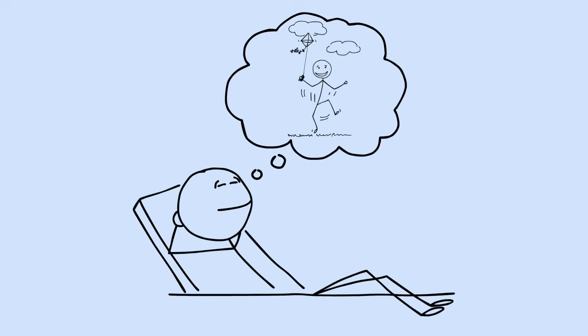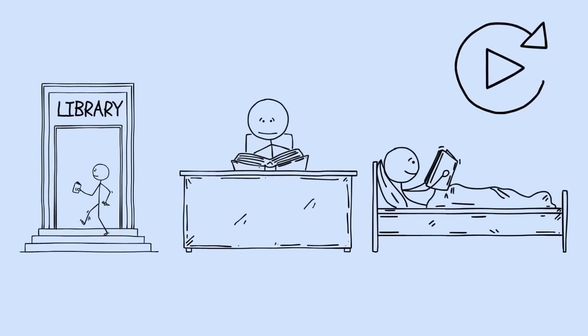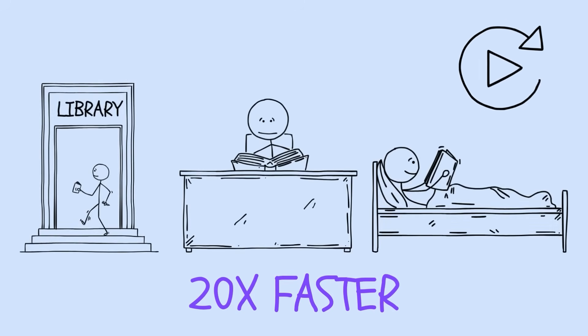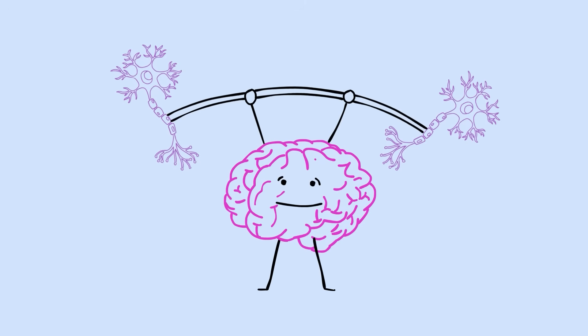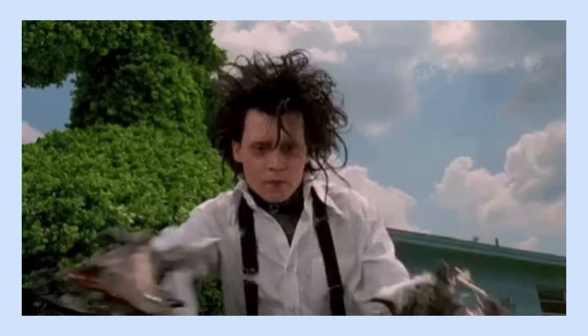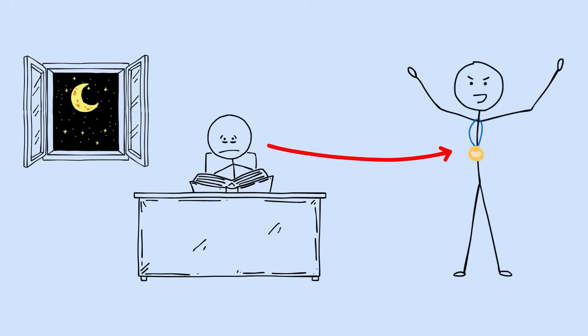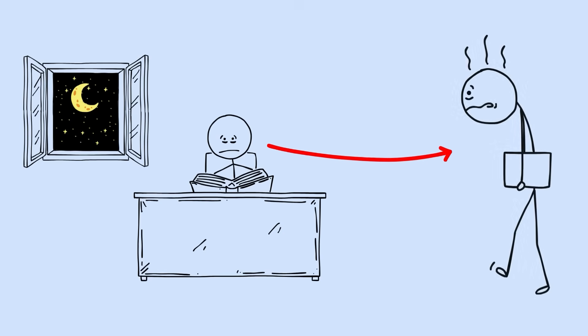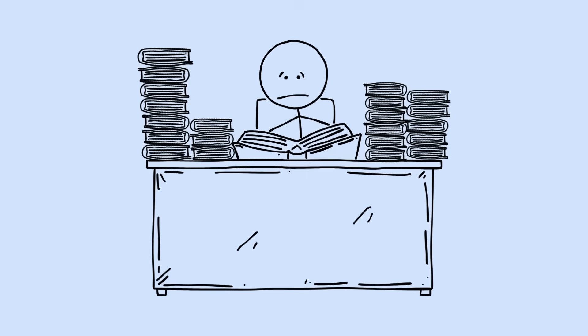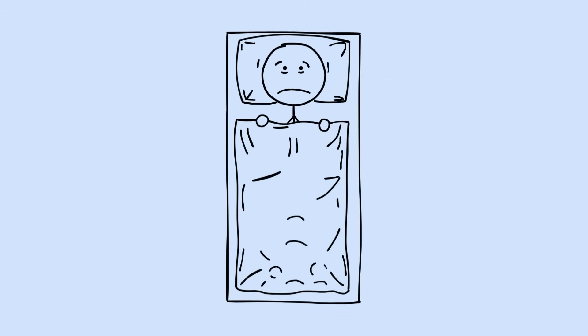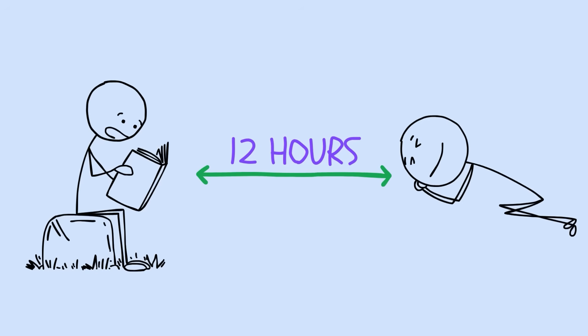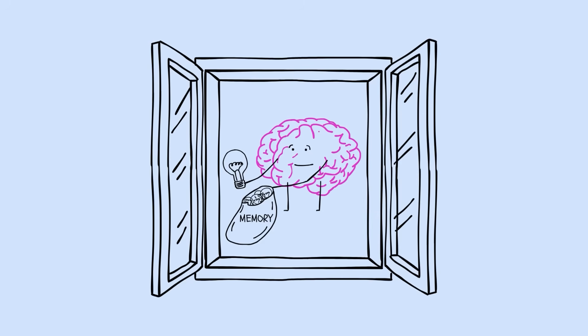Here's what your brain does while you're dreaming. It replays the day's experiences up to 20 times faster than real time, strengthening the neural pathways that matter and pruning the ones that don't. We treat all-nighters like badges of honor when they're actually badges of inefficiency. One night of poor sleep can undo a week of good studying. The timing matters too.